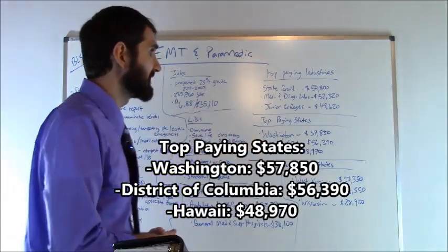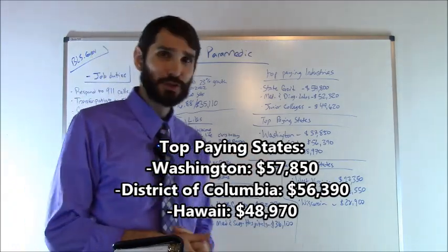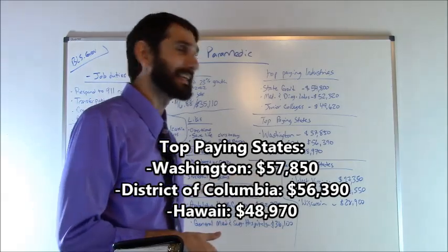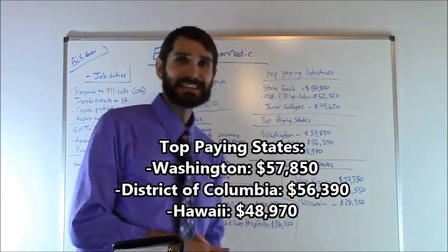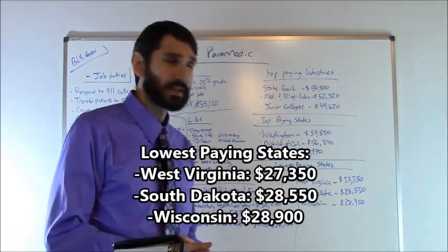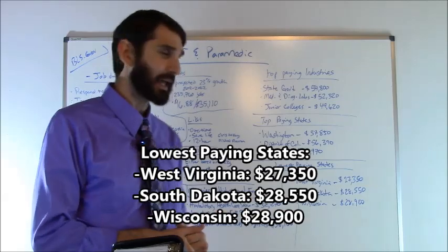Washington came in at number one at $57,850. District of Columbia number two at $56,390. Hawaii number three at $48,970. The lowest paying state: West Virginia at $27,350. South Dakota came in at number two at $28,500, and Wisconsin came in at number three at $28,900.